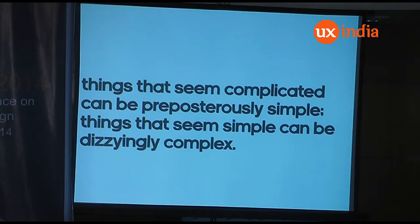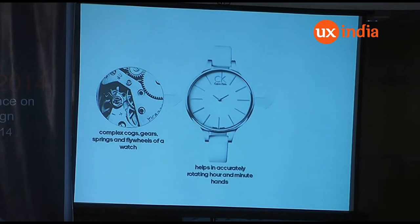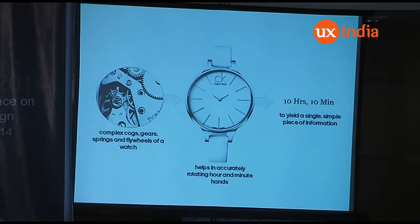Things that seem complicated can be very simple, and things that look very simple can actually be very complicated. For example, if you look at any typical manual handwatch — you pull it up, open it, and you see the cogs, gears, wheels, and springs. All of it is so complex; the structure and mechanism are very complex. But what that whole complexity really does is just allow two hands to move accurately. And those two hands tell us a very important piece of information that runs our life — that it's 10:10, and I have to do something at this time.